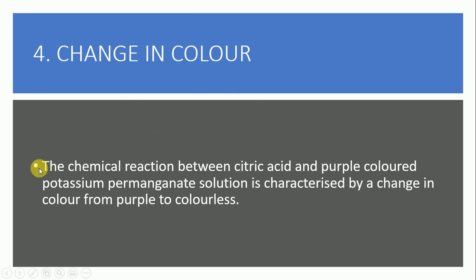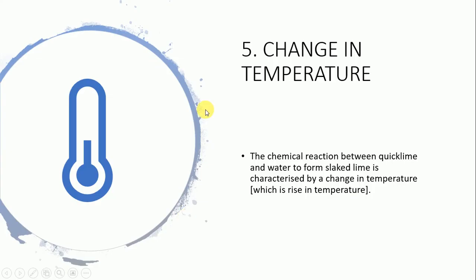Change in color. The chemical reaction between citric acid and purple-colored potassium permanganate solution shows a change in color. Change in temperature: the chemical reaction between quick lime and water shows a change in temperature — there is a rise in temperature.